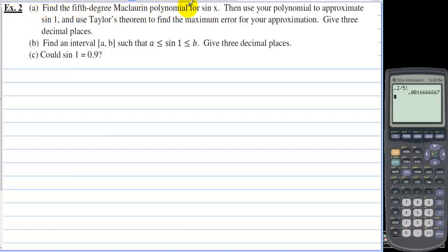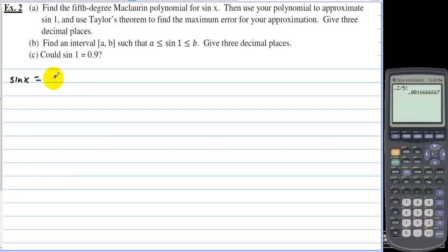Example 2: Find the 5th degree Maclaurin polynomial for sin(x), then use your polynomial to approximate sin(1), and use Taylor's theorem to find the maximum error. The 5th degree Maclaurin polynomial for sin(x) is: x − x³/3! + x⁵/5!.